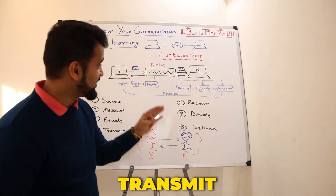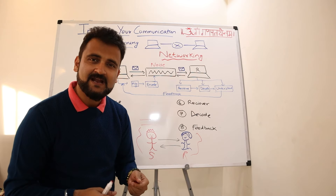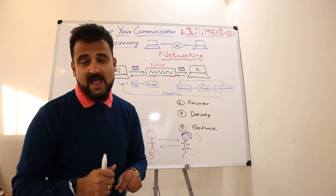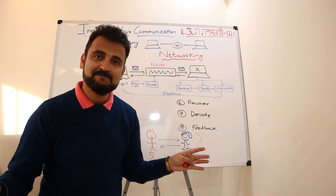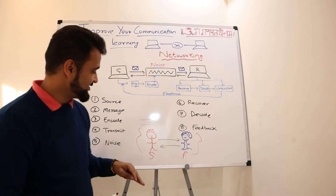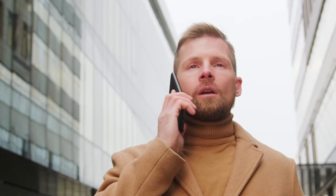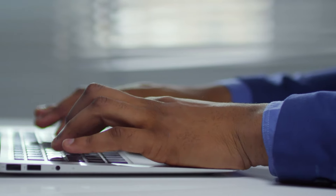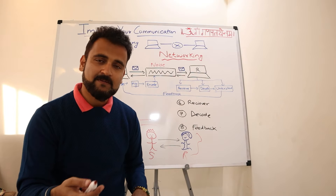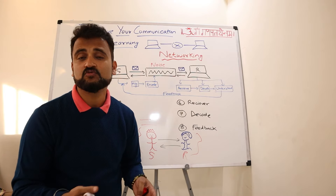Then comes the transmit phase — transmission is when the message is actually conveyed. This is where you have different channels: you are talking on mobile, talking on stage, texting someone, sending an email, writing a letter — what kind of transmission channel you are using. And based on that channel you will have noise. Noise is the villain of all good communication going wrong. Noise is the distraction you encounter while transmitting your message — it could be traffic noise in the background on a phone call, or bad grammar and spelling mistakes in a letter.